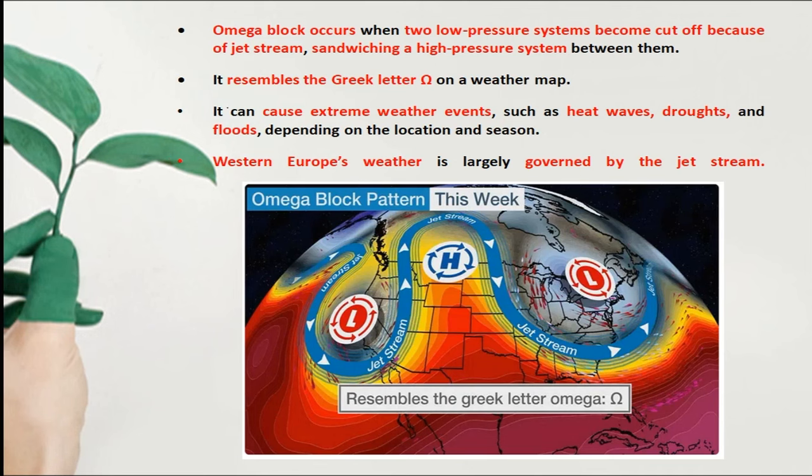Omega Blocking occurs when there are two low pressure systems with a high pressure system in between. This arrangement has the shape of the Greek letter Omega, which is why it's called Omega Blocking.